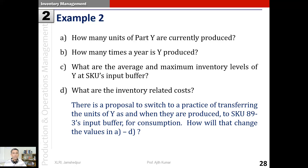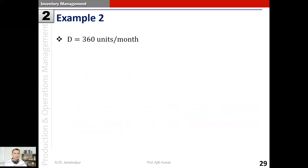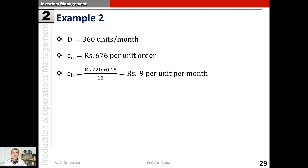Instead of waiting for the entire quantity of Y to be produced and then transferring it all at once, the proposal is to transfer units as and when produced and consume them as the consumption rate requires. Solving the problem: d = 360 units per month (180 × 2, since each SKU unit needs 2 units of Y). The order cost is rupees 676 per order. The holding cost is 720 × 0.15 / 12 = rupees 9 per unit per month.